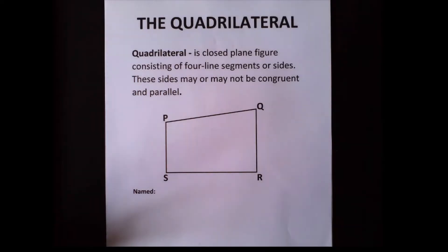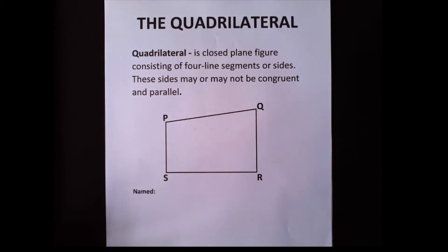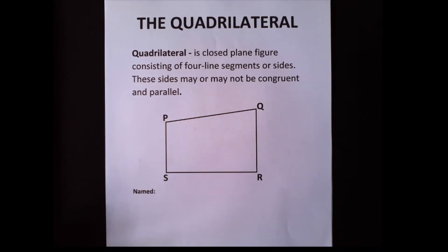Today our lesson is all about quadrilaterals. A quadrilateral is a closed figure consisting of four line segments or sides. These sides may or may not be congruent and parallel.